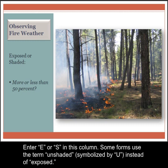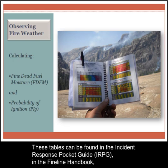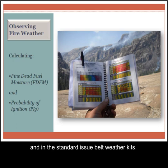Enter E or S in this column. Some forms use the term unshaded, symbolized by U, instead of exposed. In S290, you'll learn the process for determining fine dead fuel moisture using reference fuel moisture and correction tables. These tables can be found in the Incident Response Pocket Guide, in the FireLine Handbook, and in the Standard Issue Belt Weather Kits.